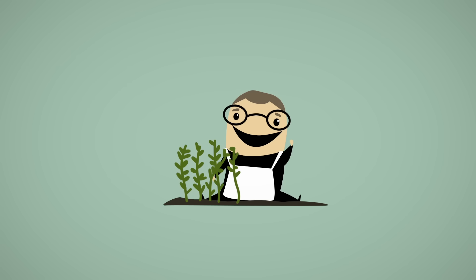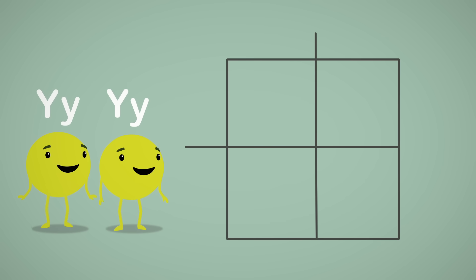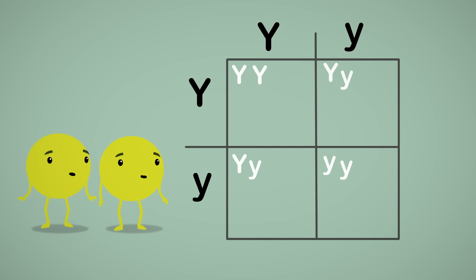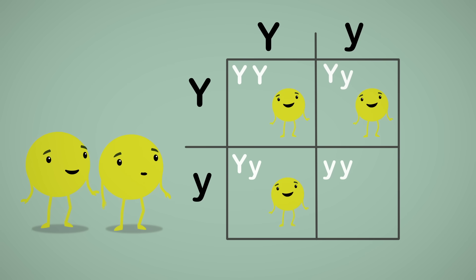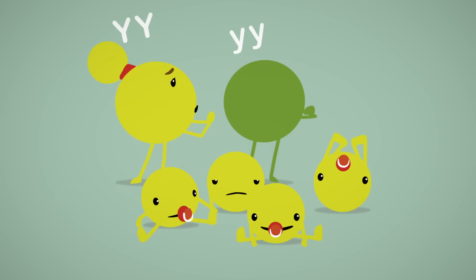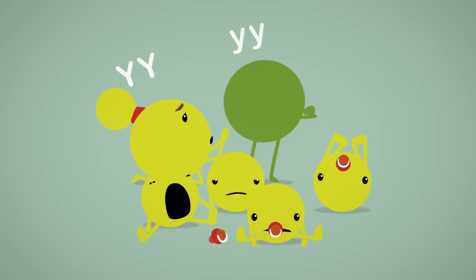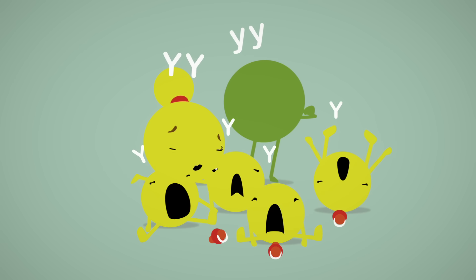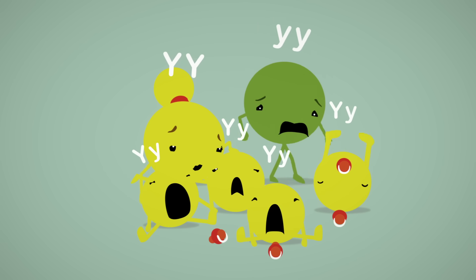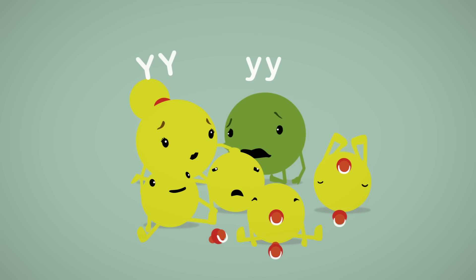Let's look at Mendel's peas, for example. Let's write the dominant yellow allele as an uppercase Y, and the recessive green allele as a lowercase y. The uppercase Y always overpowers his lowercase friend, so the only time you'd get green babies is if you have two lowercase y's. In Mendel's first generation, the yellow homozygous pea mom will give each pea kid a yellow dominant allele, and the green homozygous pea dad will give a green recessive allele, so all the pea kids will be yellow heterozygous.